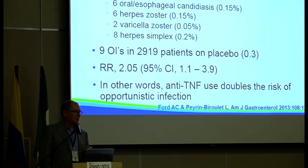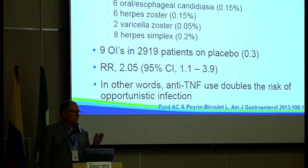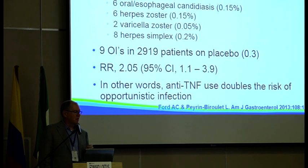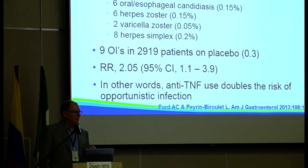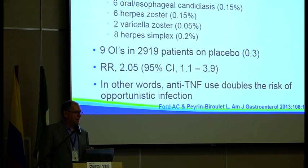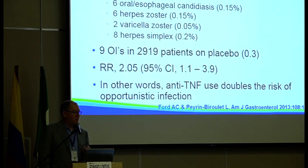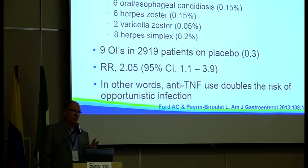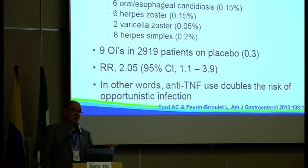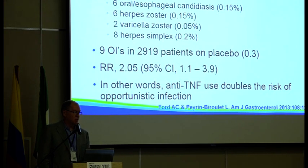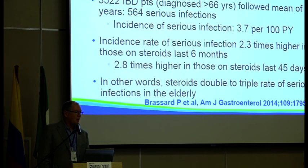A meta-analysis of multiple randomized controlled trials looked at opportunistic infections in trials of anti-TNF therapy, examining over 4,000 patients. There were 39 opportunistic infections: eight TB, six candidiasis, six zoster, two varicella, eight herpes. In placebo-treated patients there were nine infections in about 3,000 patients. The math comes out to about a two-fold increased risk — patients on anti-TNF were twice as likely to have an opportunistic infection compared to placebo.